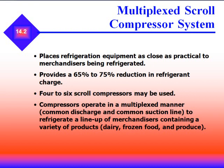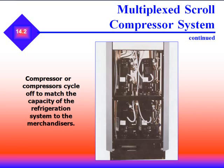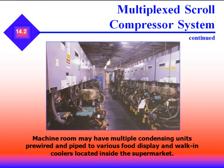Multiple scroll compressor systems place refrigerant equipment as close as practical to the merchandisers being refrigerated, providing a 65–75% reduction in refrigerant charge. Four to six scroll compressors are used, operated in a multiplex manner with common discharge and common suction lines to refrigerate a lineup of merchandisers containing a variety of products — dairy, frozen fruit, produce. Machine rooms may have multiple condensing units pre-wired and piped to various food display and walk-in coolers located inside a supermarket.